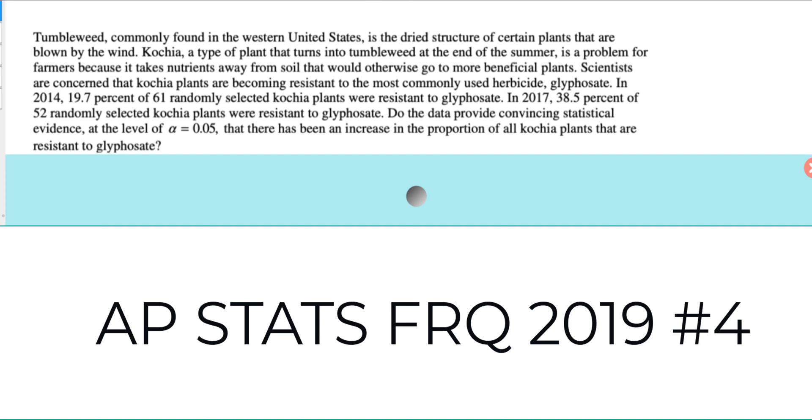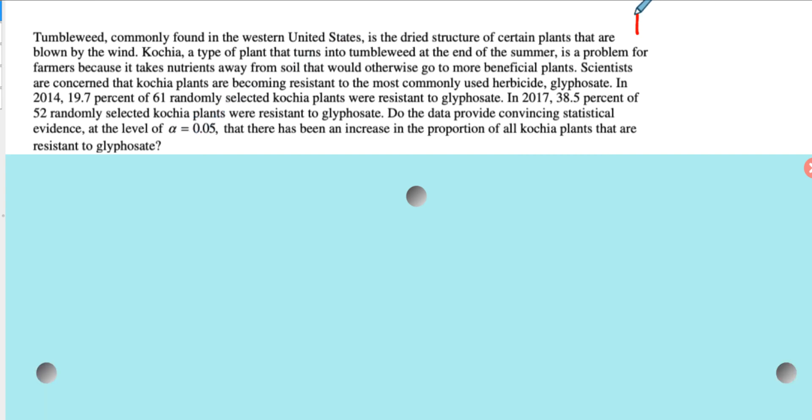Okay, welcome back. We're looking at number four from 2019 on the AP stat free response question. This is obviously a significance test and I can give you an alpha level, so that gives you a pretty good clue. So my students run through the acronym PHANTOMS, and that tells them all the steps they need to do in a significance test.